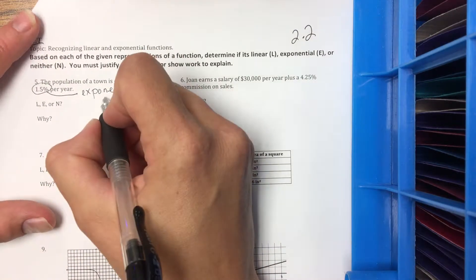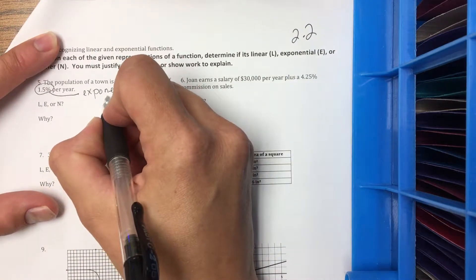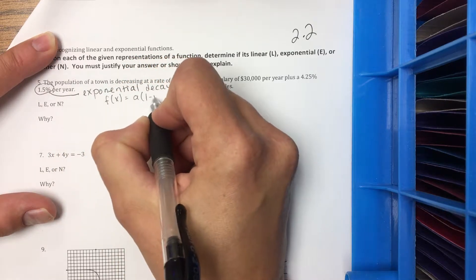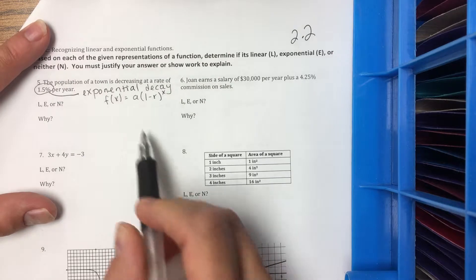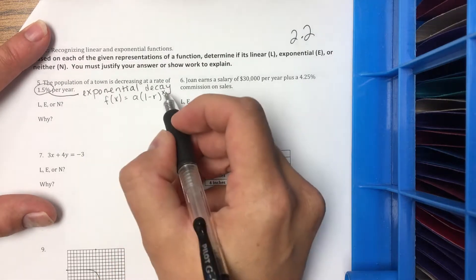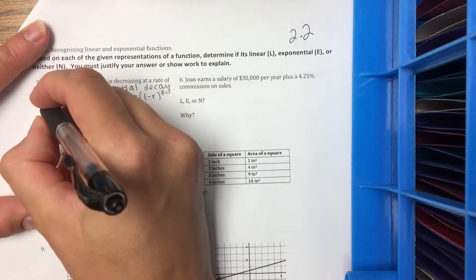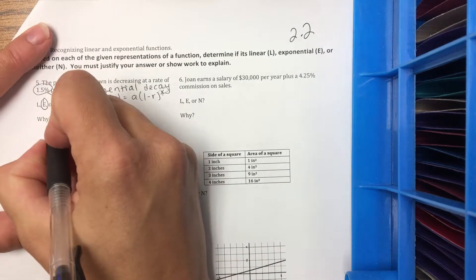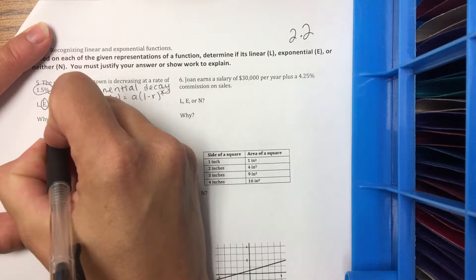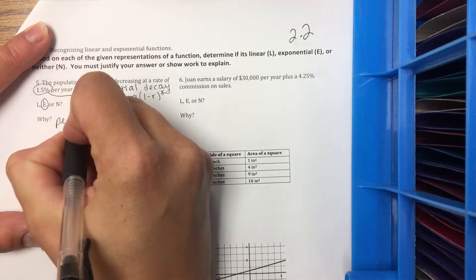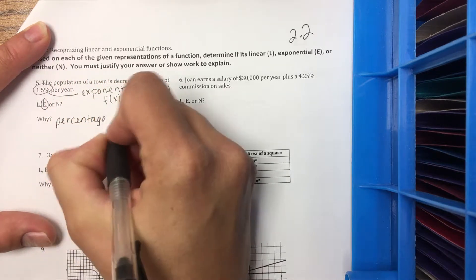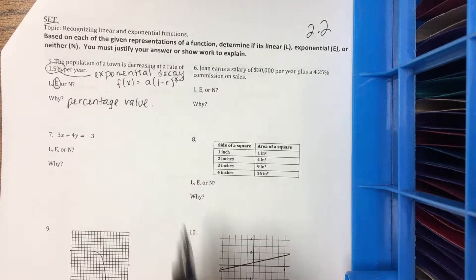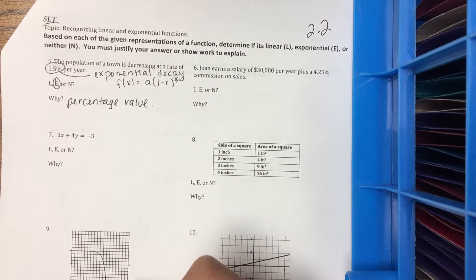And we can remember from 2.1, we would write a function, our decay function, where we have an exponent. So that would make this exponential. Whenever you see a percent, so my y is because there's a percentage value. That always means exponential, because then we put it in our growth or decay formulas.